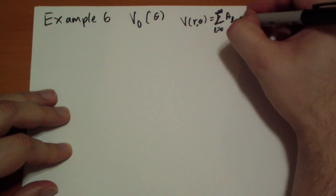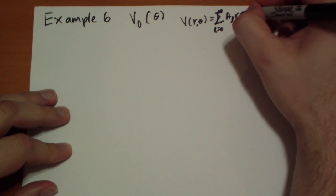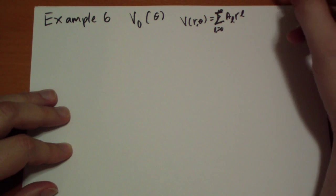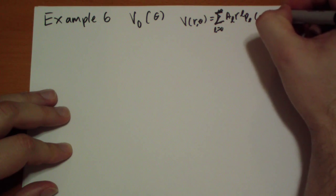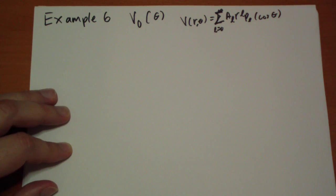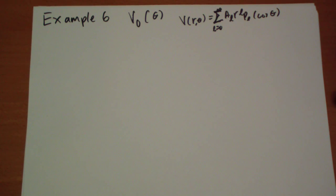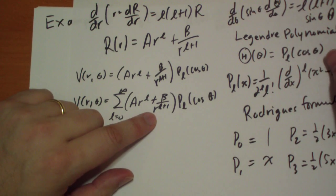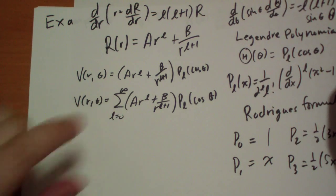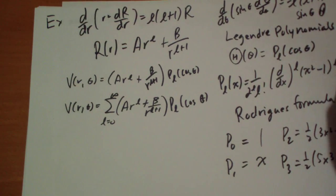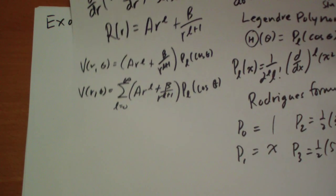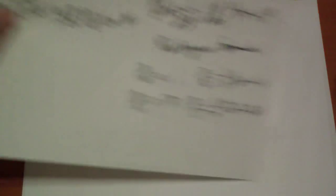of a_l r^l P_l(cos theta). Now why did we drop that? Remember we had this b term of r to the negative l plus 1. The reason is because we have to calculate for r equals 0, so this term is going to go to infinity at the origin, so we can't use that one. We have to use the a_l r^l one only.